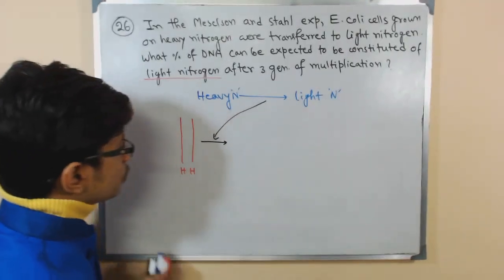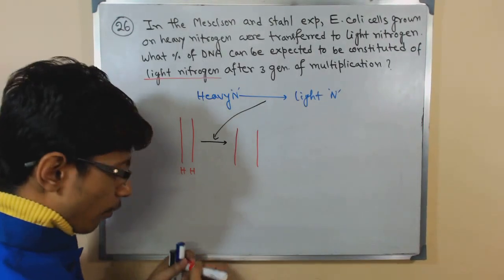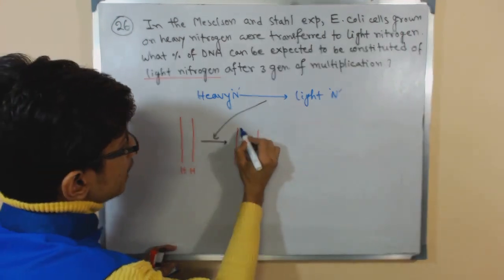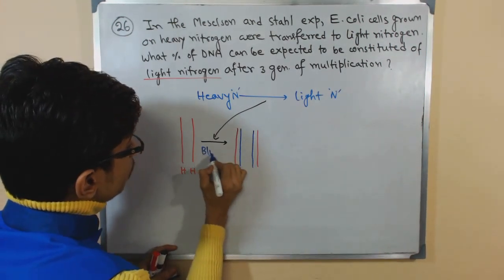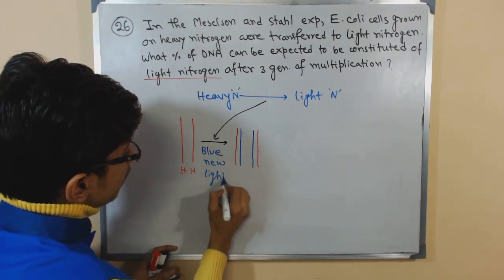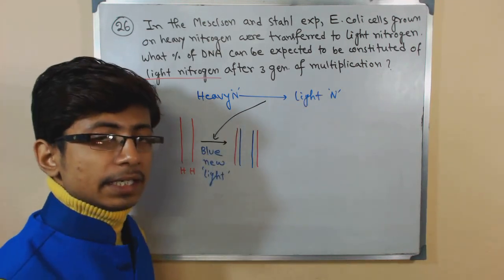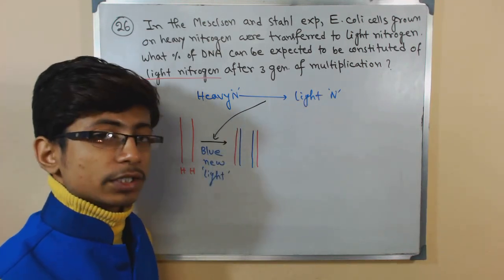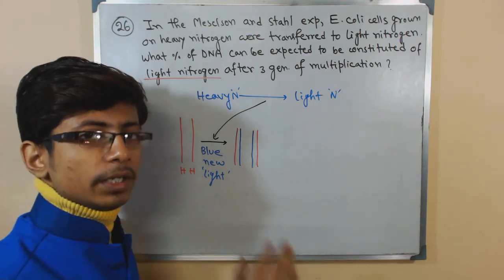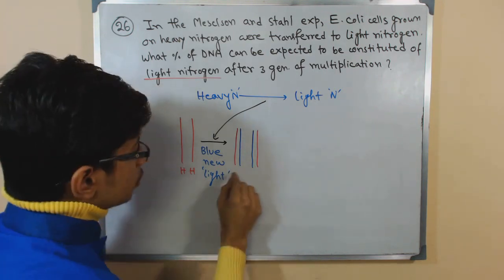So in this case, if these are the old parent strands, they will be just kept as they were. And instead of that, they produce and add new strands. This blue are new strands. So here blue means new and new means obviously light here because we have already transferred them into the light nitrogen-containing media. So whatever bases will be added afterwards will contain light nitrogen. They won't contain heavy nitrogen.